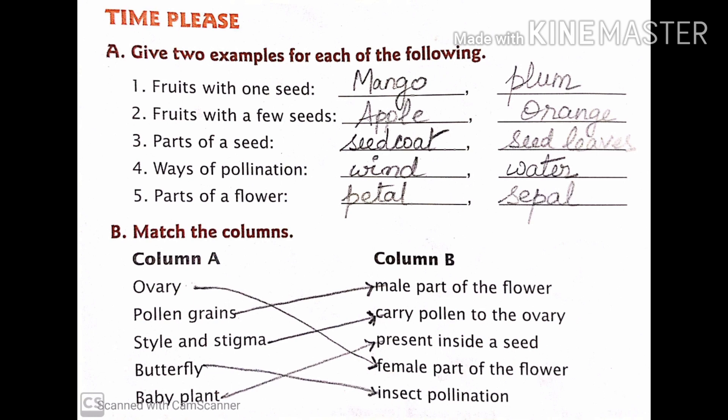Part A was give two examples for each of the following. First, fruits with one seed: answer mango and plum. Second, fruits with a few seeds: example apple and orange.